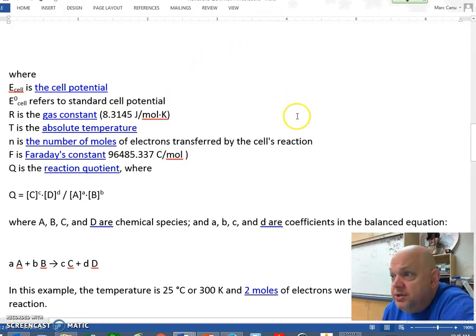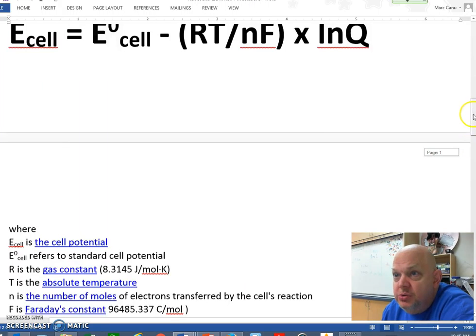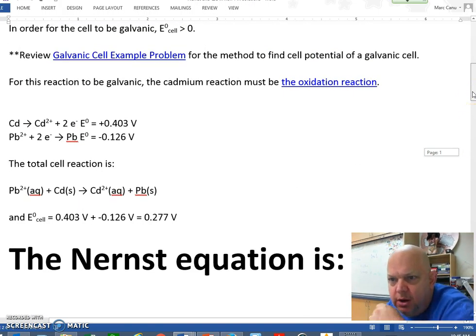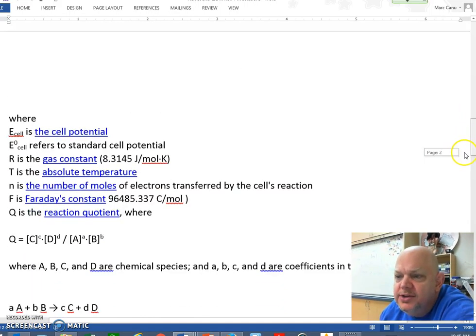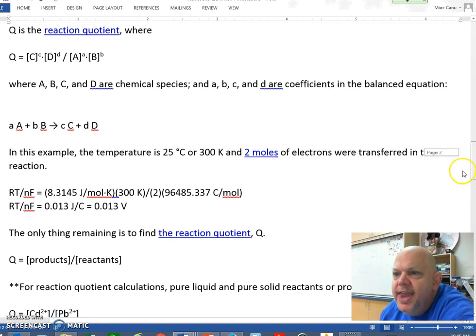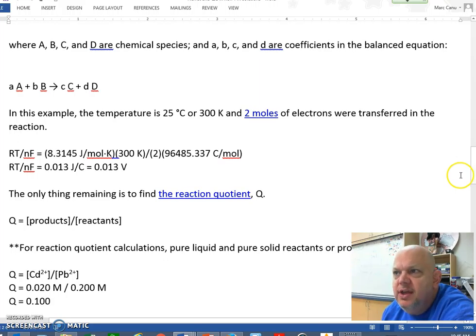Where Q is equal to product over reactant, the concentration of our product over reactant. Now may I point out that when you look at the equation, lead is aqueous, the cadmium is solid on the reactant side. Product side, lead is solid and the cadmium is aqueous. Are we worried about the solids when we look at equilibrium? No, we're not. So that makes the numbers pretty easy for us.